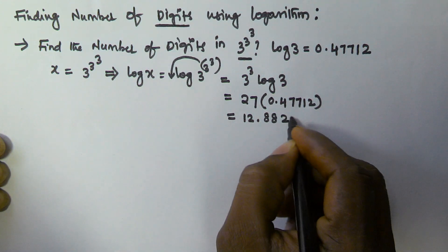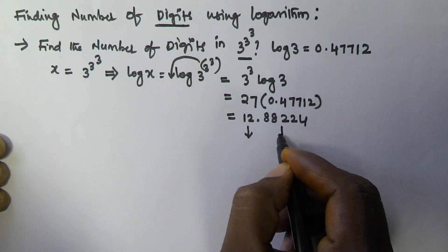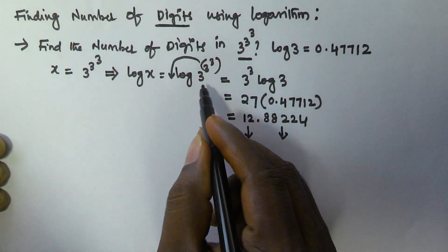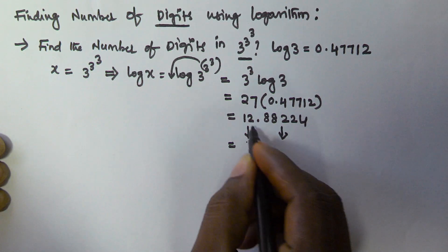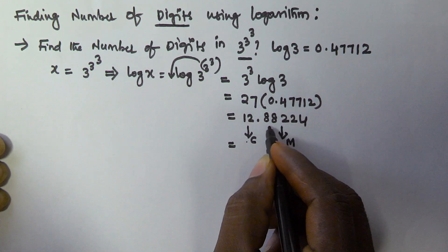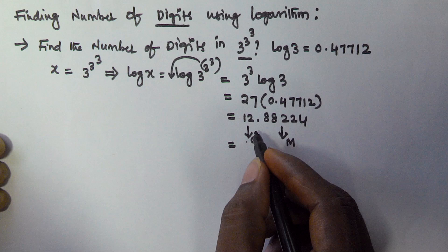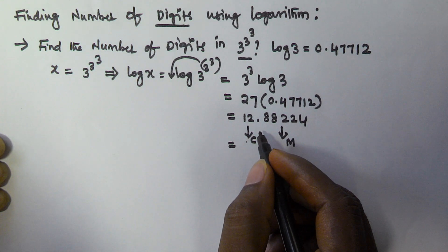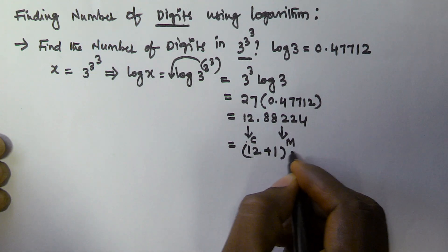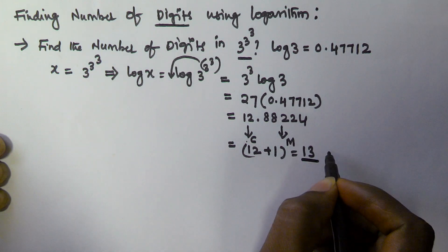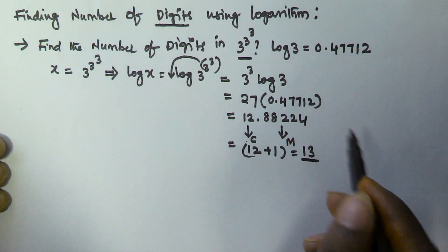When we do the multiplication we get 12.88224. Here the characteristic is 12 and this is the mantissa. The number of digits in a given value is found by adding 1 to the characteristic. So the number of digits in 3 to the power of 3 to the power of 3 is characteristic plus 1.